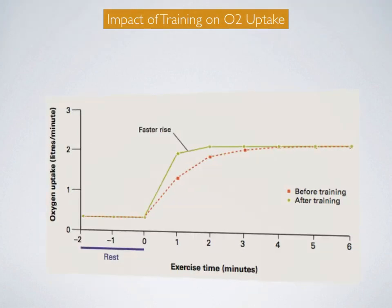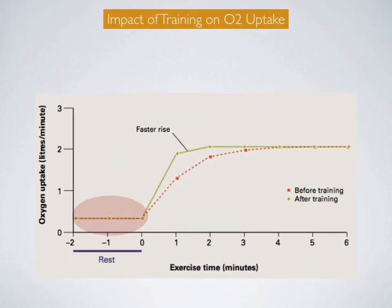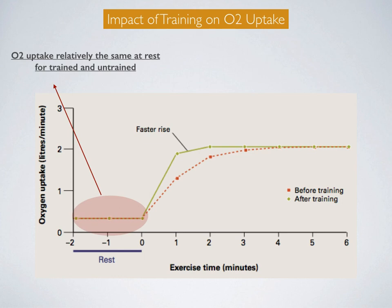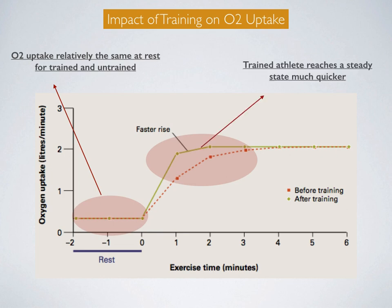Looking at this graph in relation to oxygen uptake, you can clearly see that at rest, oxygen uptake is relatively the same between trained and untrained athletes. But you can see the faster rise as a result of training — oxygen becomes available much more quickly for a trained athlete, and the trained athlete can reach the steady state far more quickly. Thank you very much for listening.